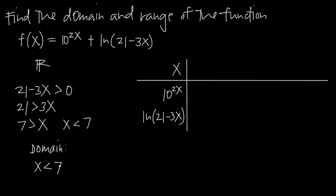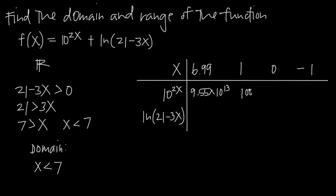We're going to pick some test values for x. Let's pick something close to the largest possible value, like 6.99, and then some other easy values: 1, 0, and negative 1. These are all x values in the domain since they're all less than 7. Plugging 6.99 into 10 to the 2x gives approximately 9.55 times 10 to the 13. Plugging in 1 gives 10 to the 2, which is 100. Plugging in 0 gives 10 to the 0, which is 1. Plugging in negative 1 gives 10 to the negative 2, which is 1 over 100.